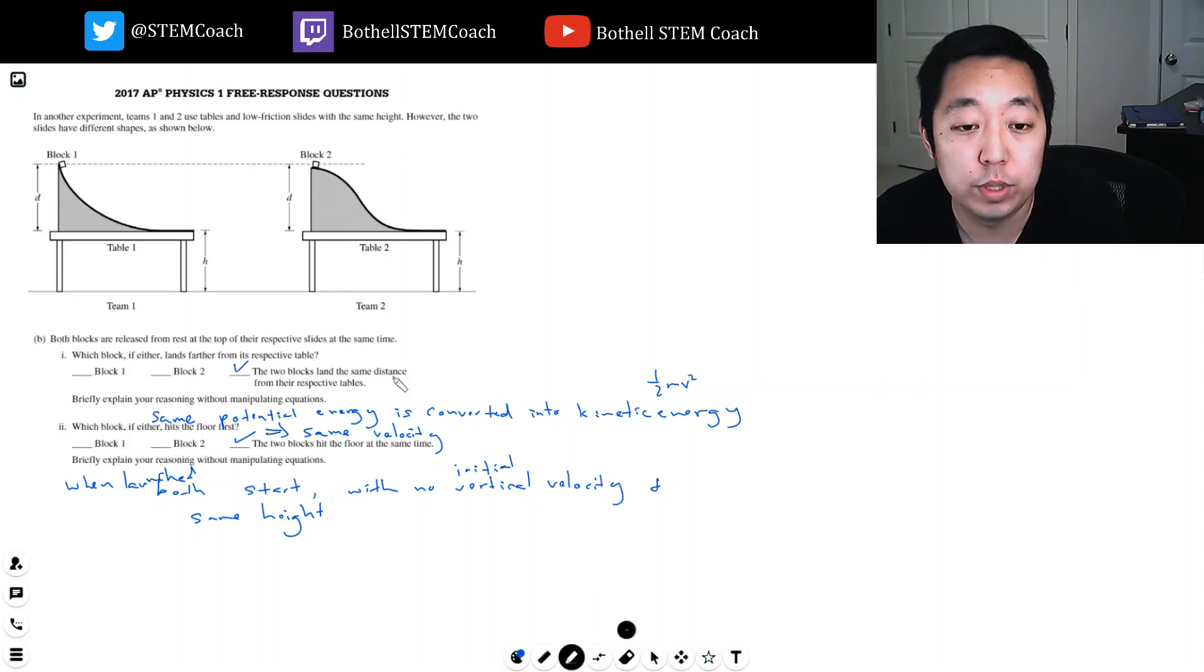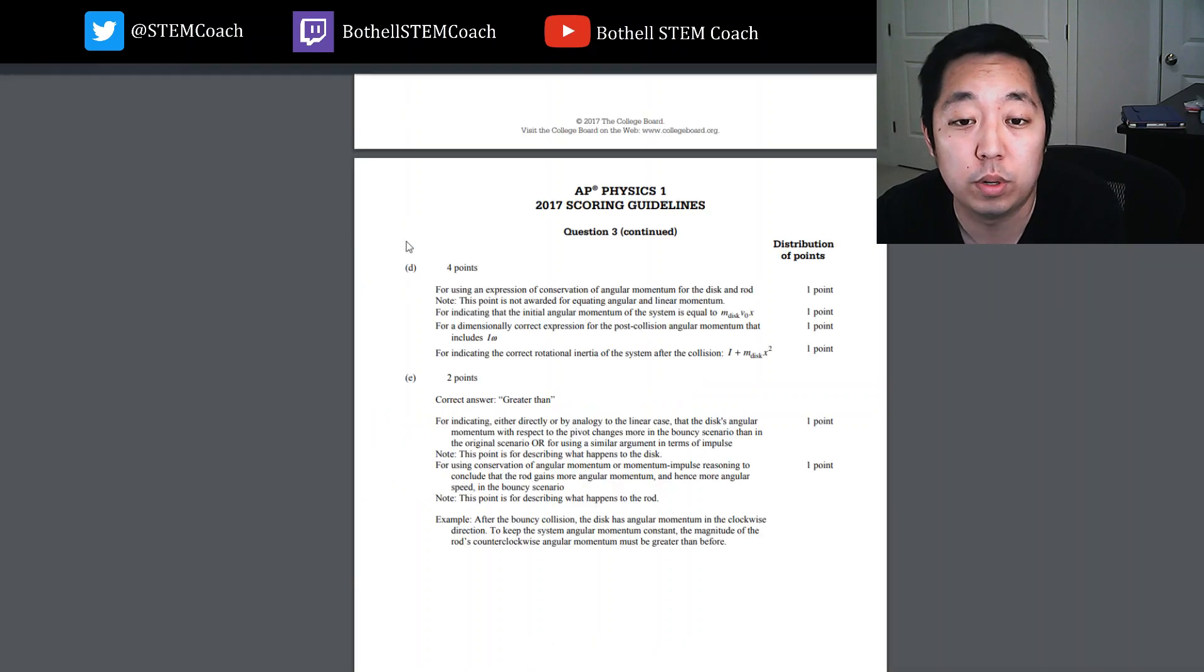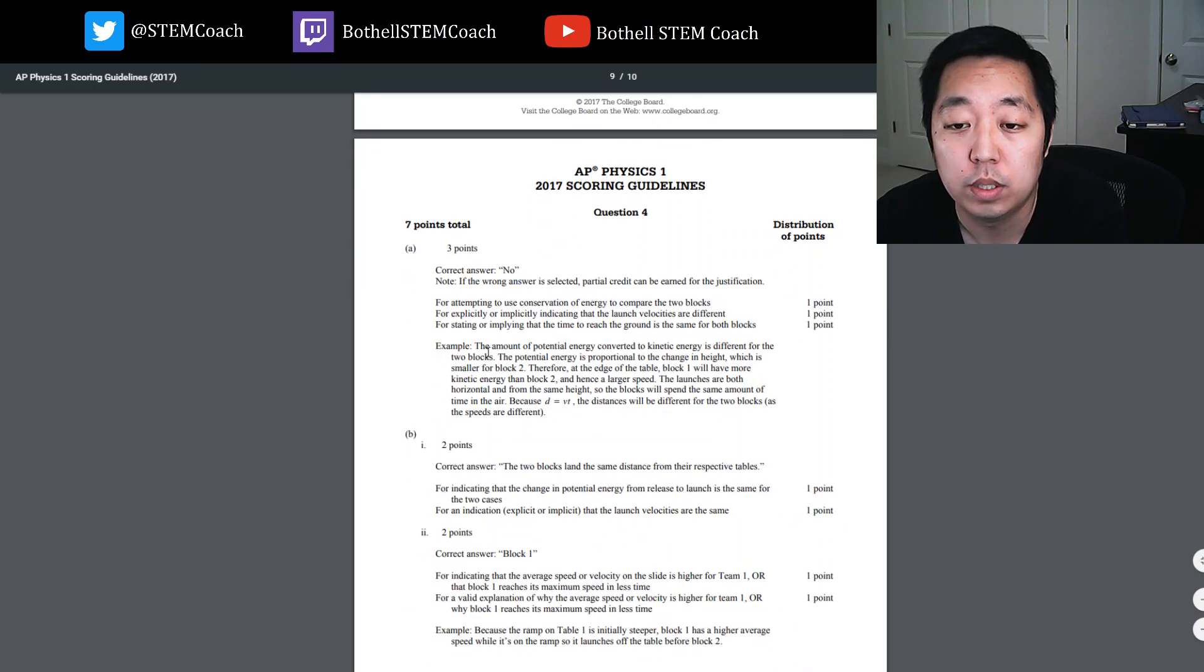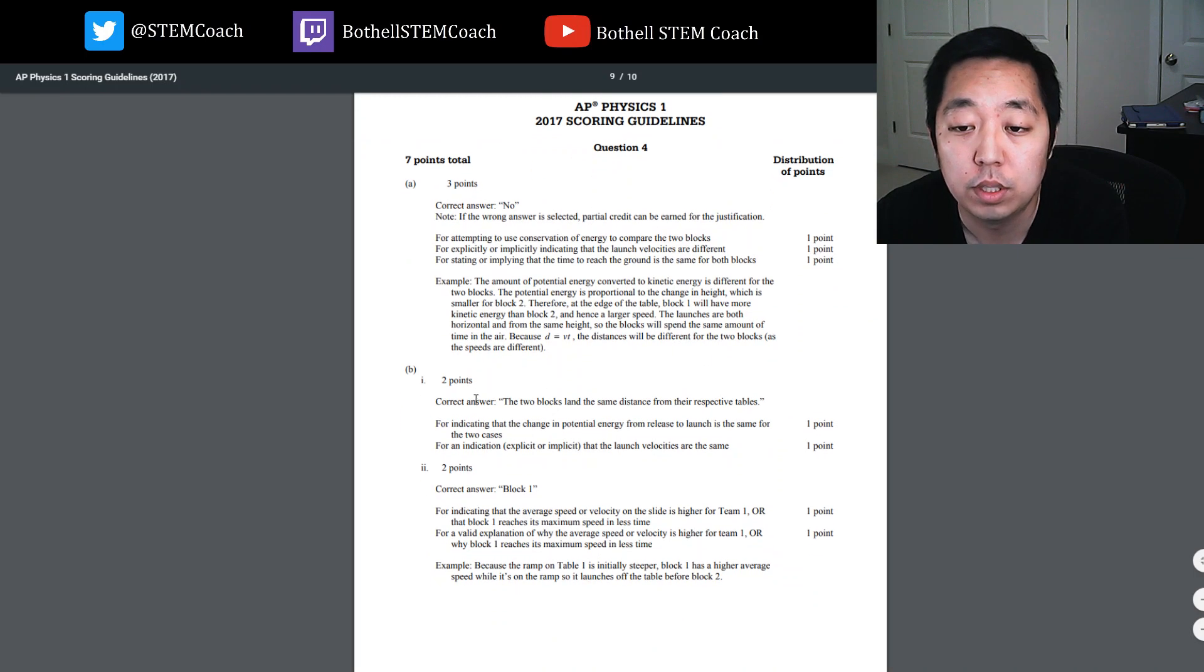Okay, so that was a really qualitative question, kind of weird. Let's take a look at the scoring guidelines for that one. Question four - answer is no. The amount of potential energy converted is different for the two blocks. The potential is proportional to the change in height, which is smaller for block two. Okay, so yeah, that's what we reasoned out. The two blocks land the same distance because the same change in potential energy to kinetic energy. Correct answer is block one. Wait...